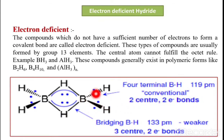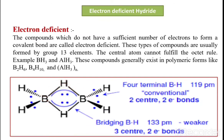In B2H6, the four terminal B-H bonds are called two-center two-electron bonds, because each bond is formed by two electrons. The remaining bridging hydrogens form three-center two-electron bonds — three-center because three atoms are involved (B-H-B), and two-electron because each bond is formed by two electrons. In exams, questions often ask how many bridging or terminal bonds are present in B2H6.